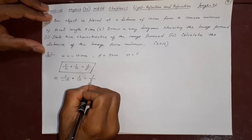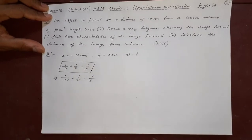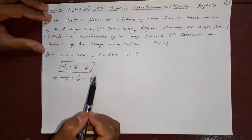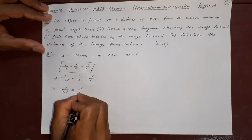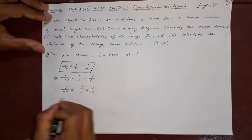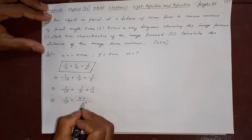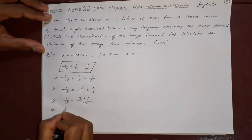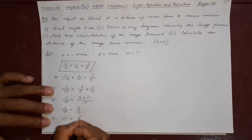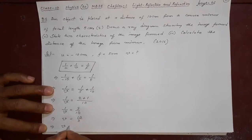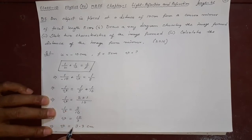Now substituting the numbers: 1/U is −10, and 1/F is 5 cm. V is a question mark. So 1/V = 1/5 + 1/10. Taking LCM as 10: that gives 2/10 + 1/10, so 1/V = 3/10.